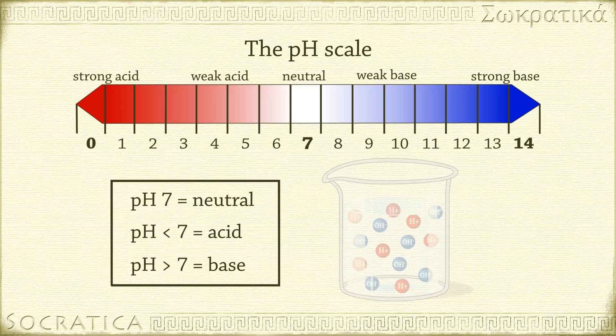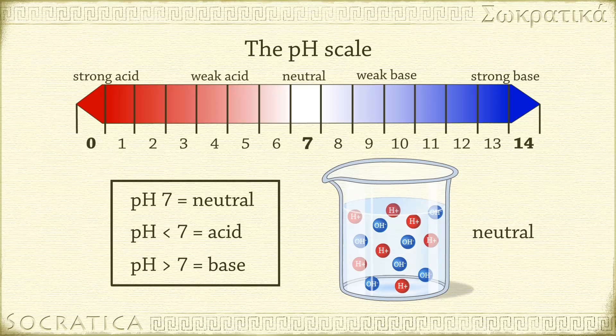Another way to think about this is that the concentration of H+ and OH- ions depend on each other. The more H+ ions there are in a solution, the fewer OH- ions. The more OH- ions there are in a solution, the fewer H+ ions.